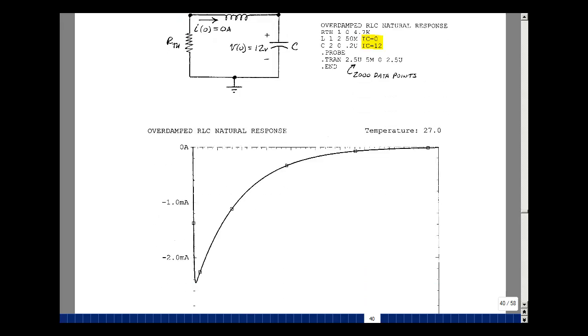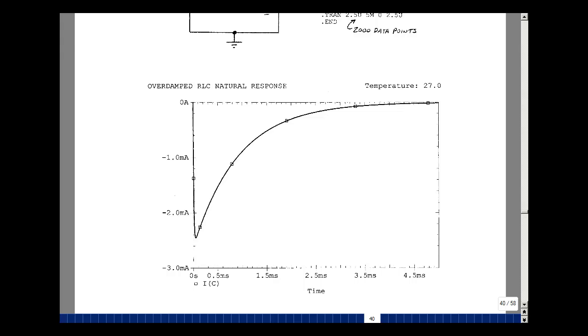Here's my output. I plotted the current in the capacitor. Any component in the series combination gives the same results. You can see that this dips down and comes back up again.